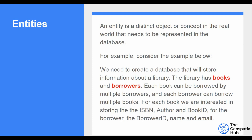Let's look at this example: we have to create a database that will store information about a library. The library has books — 'books' is the noun, so it's an entity. The library also has borrowers, people who lend books. So from this question those are the two entities: books and borrowers. Each book can be borrowed by multiple borrowers, and each borrower can borrow multiple books. For each book we store the ISBN, the author, and the book ID; for each borrower we store the borrower ID, name, and email.